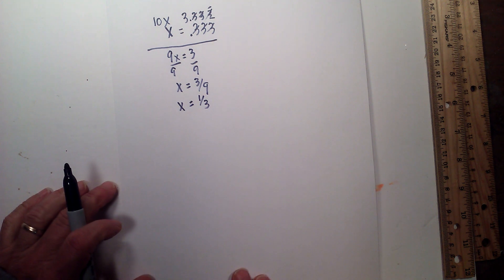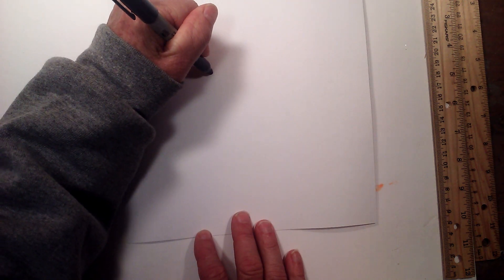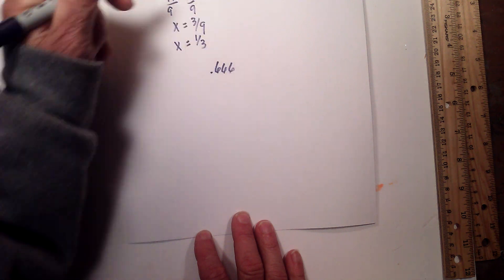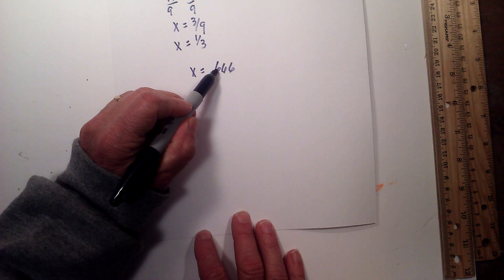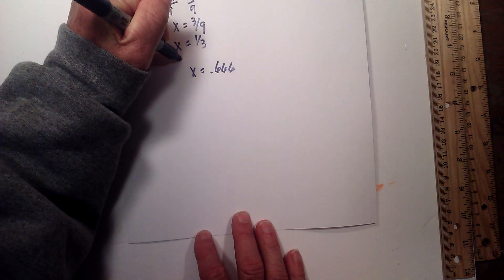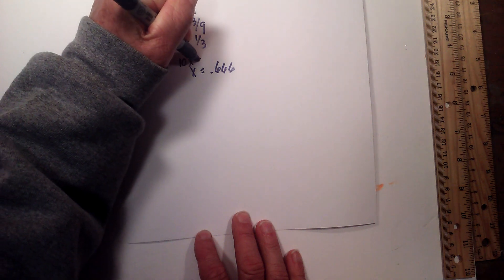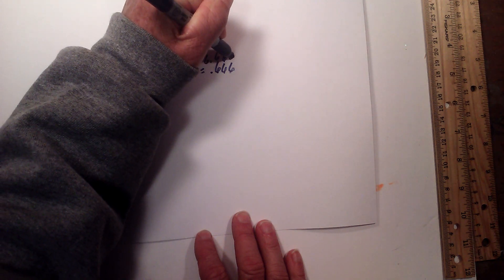Okay, so let's work another one of these examples. These are pretty straightforward. 0.666, I'm going to set it to x. Okay, I have one digit repeating, so I'm going to multiply it by 10. So this will be 10x equals 6.666.